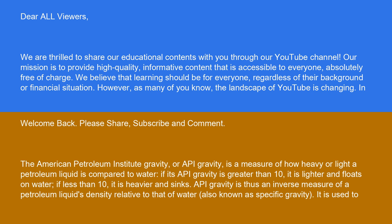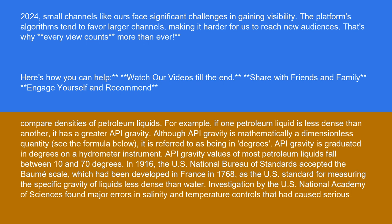API gravity is thus an inverse measure of a petroleum liquid's density relative to that of water, also known as specific gravity. It is used to compare densities of petroleum liquids. For example, if one petroleum liquid is less dense than another, it has a greater API gravity.